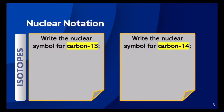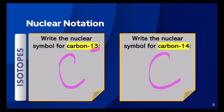Let's practice together. See if you can figure out how to write the nuclear symbols or nuclear notation for carbon-13 and carbon-14. The symbol for carbon is C. The number 13 is the mass number and goes up at the top; the number 14 is also the mass number for that isotope, so we put that at the top as well. The number at the bottom should be the number of protons or the atomic number for carbon. Carbon's protons will always be the same no matter what the number of neutrons or electrons is.